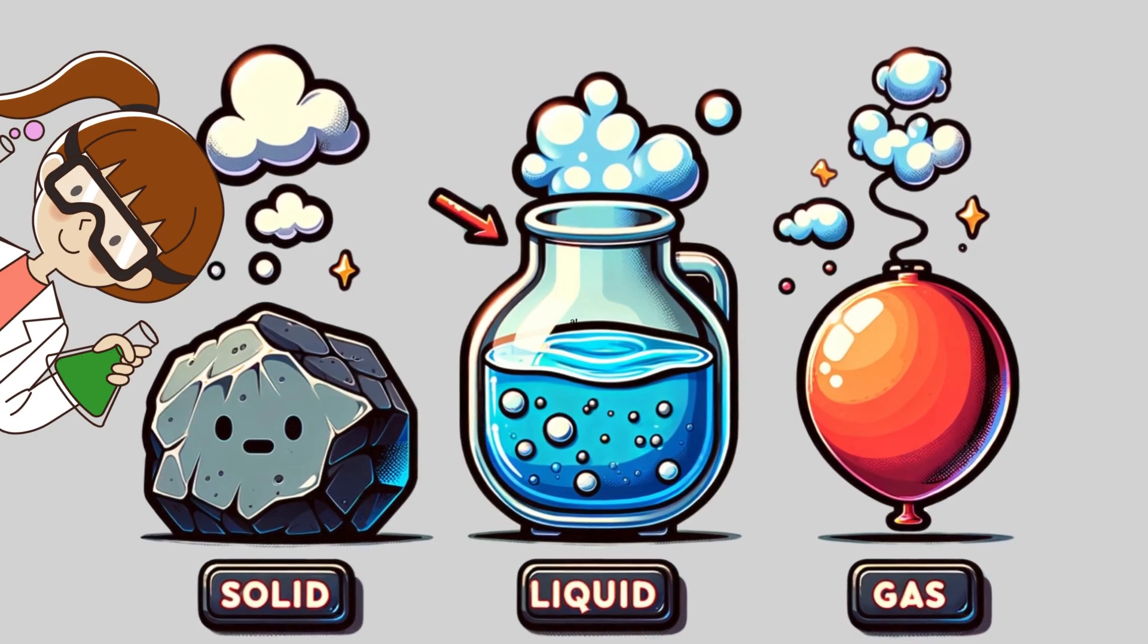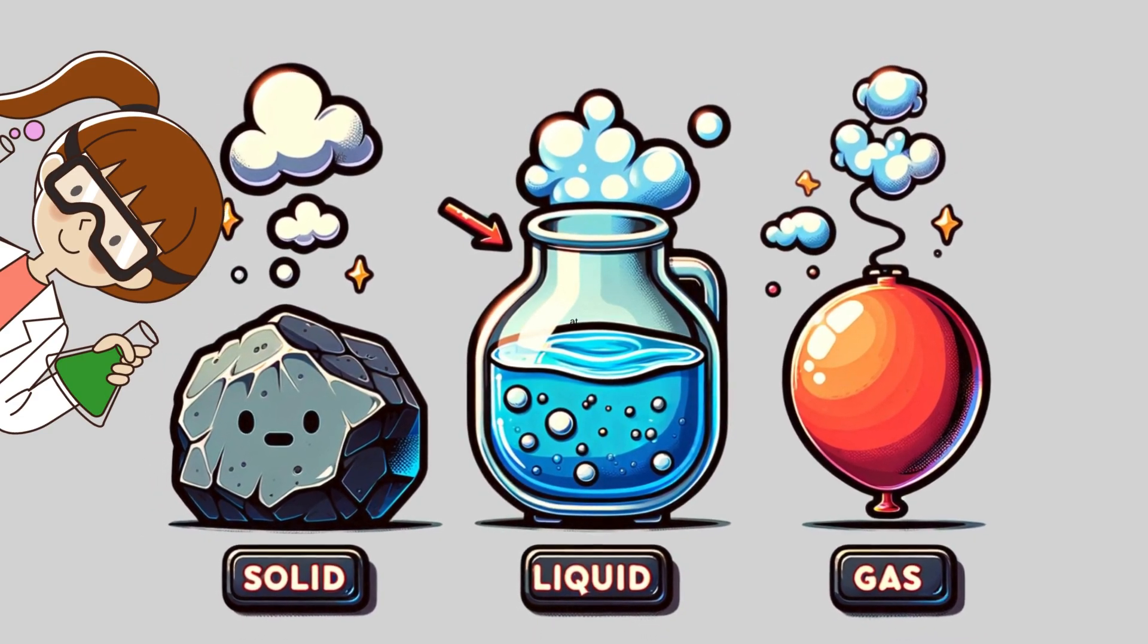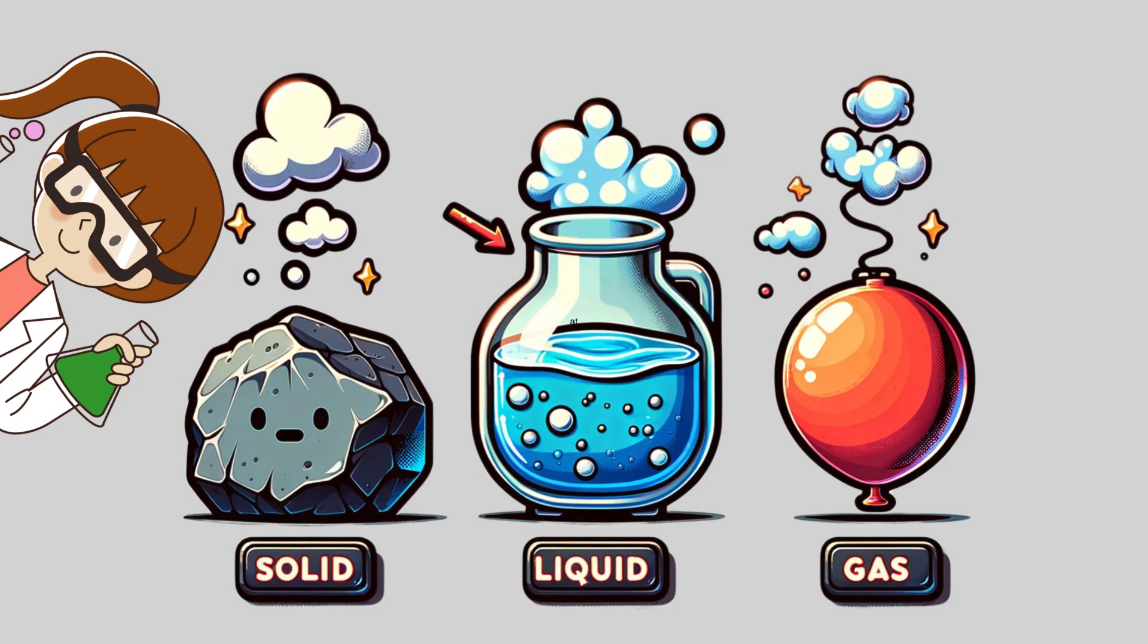Everything around us is made of matter. Matter is anything that has mass and takes up space. There are many different kinds of matter, and they can behave in some pretty interesting ways.